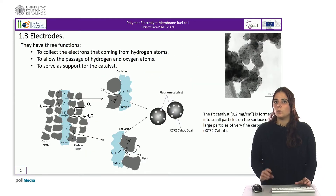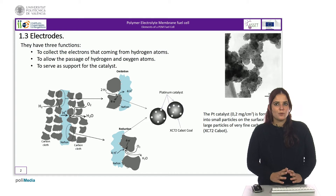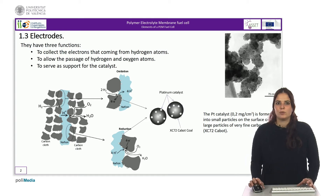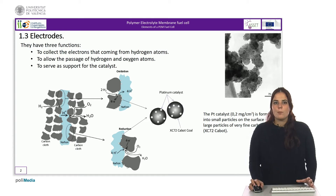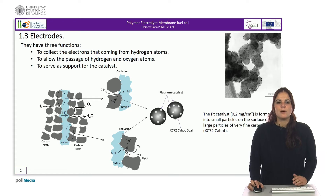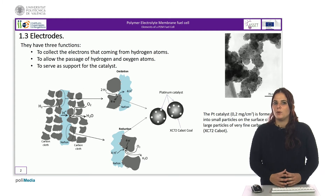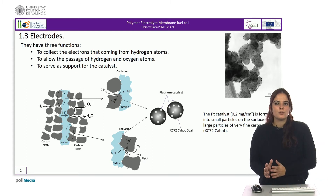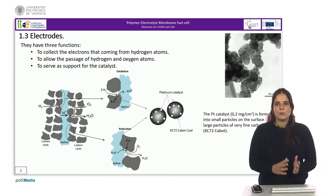We will now discuss another fundamental part of the PEM fuel cell: the electrodes. On both sides of the membrane we find the electrodes, which are responsible for collecting the electrons resulting from the dissociation of the hydrogen molecule at the anode and bringing the electrons to the cathode to form the water molecule.